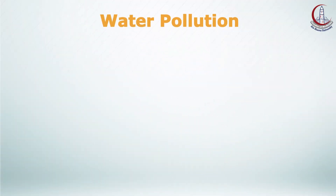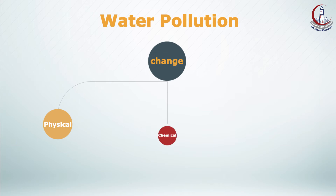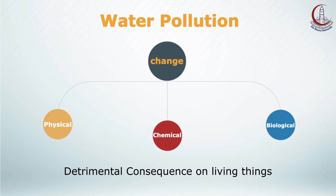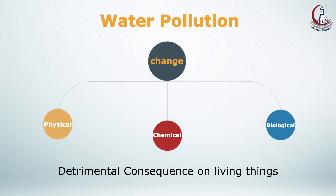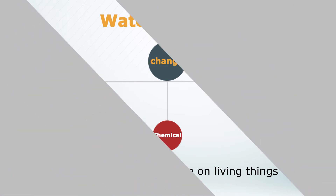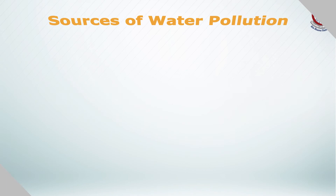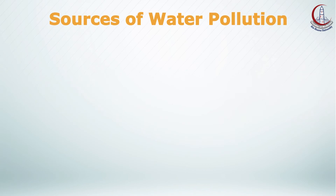So what if our water becomes polluted? Let's first understand what is meant by water pollution. Water pollution is defined as any change or modification in the physical, chemical, and biological properties of water that will have a detrimental consequence on living things. We should know the sources of water pollution and try to handle them.